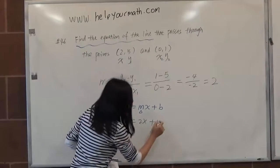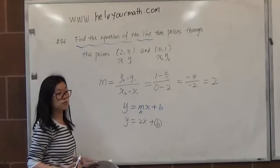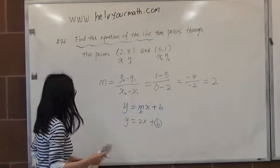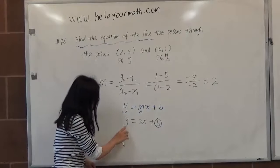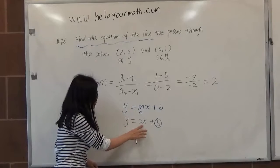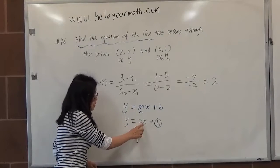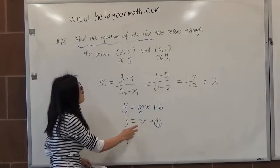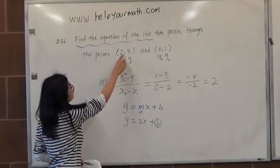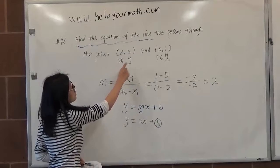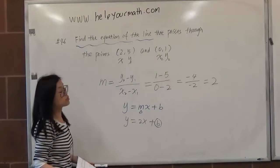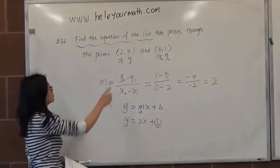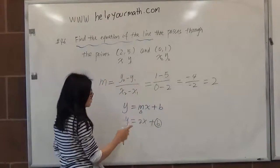Now our job is to find out what is the b value here. b is representing the y-intercept. So how can we do that? Look here, this equation we have y and x. Already we have the point (2,5) that's representing one x and y value. Also, we have another point (0,1) as x and y value. So we can pick either this point or this point to do substitution here.